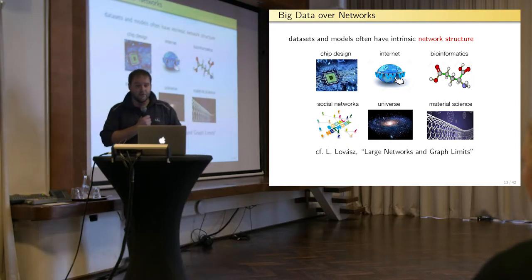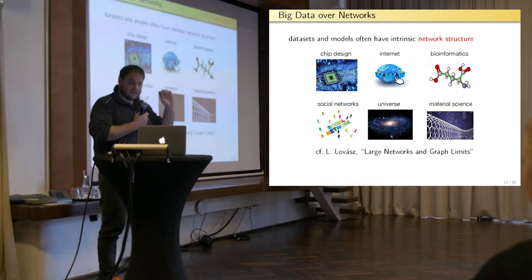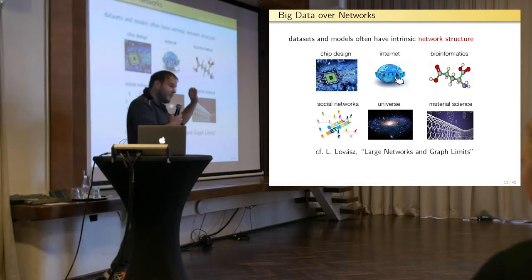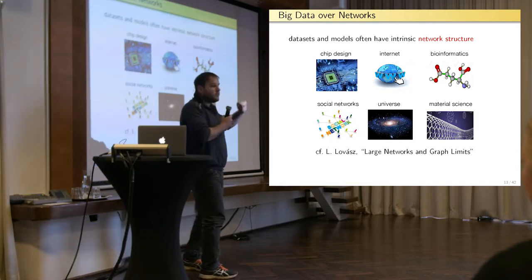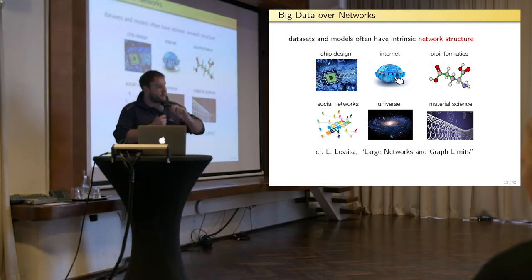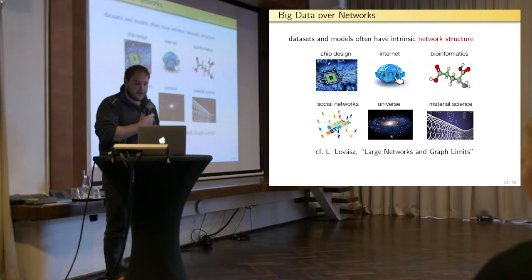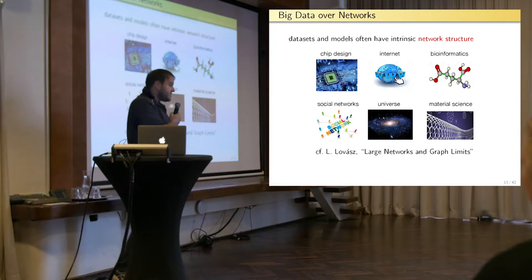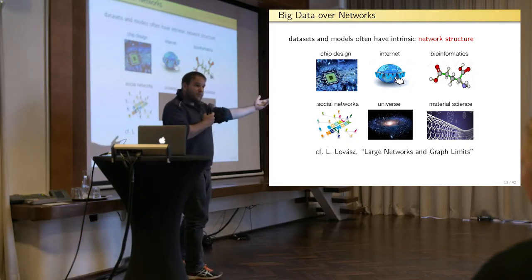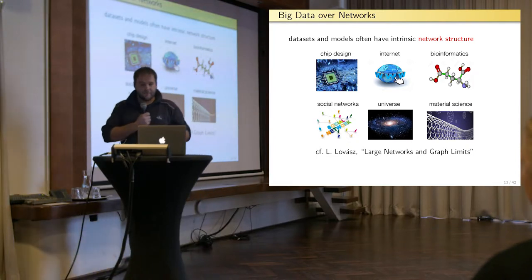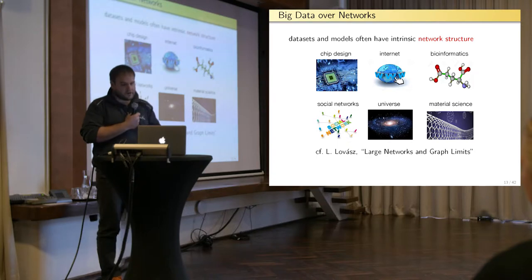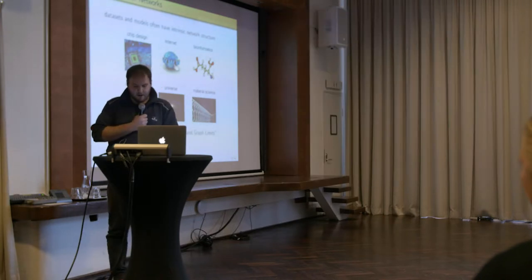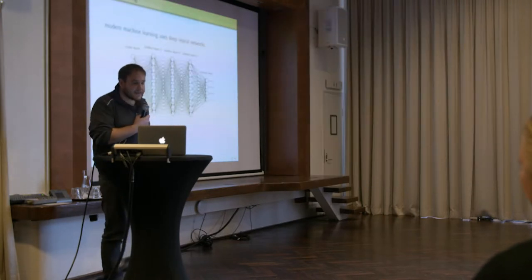But really this network representation is essential in many approaches to big data. A network representation or a network structure comes up quite naturally in a lot of application domains. I mean social networks, internet. The most unexpected example I read in a tutorial paper by Laszlo Lovasz on large networks is the universe. So particle physics can be interpreted as network science. And the universe is a network which has nodes representing events in space-time. And the edges between nodes are particles traversing from one event to another event.